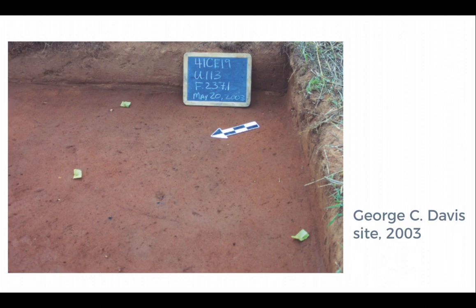The interesting thing about this photograph is that it displays the invisibility of this site. We did some geophysics, and a lot of these features showed up very clearly, and these were roundhouses. But when you excavate them, they are incredibly difficult to see. This is further exacerbated by the fact that it was in very rich red earth, surrounded by very green pasture.